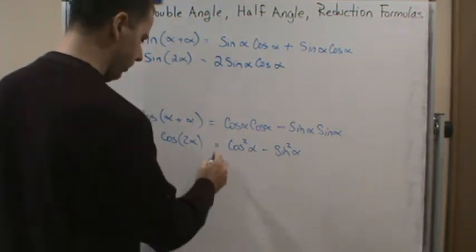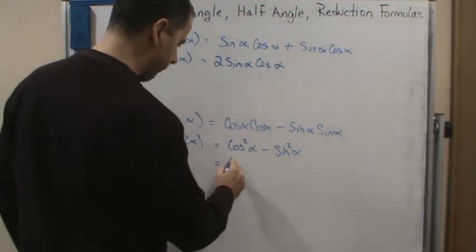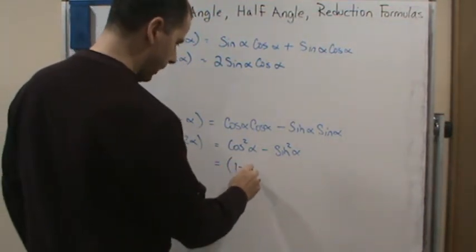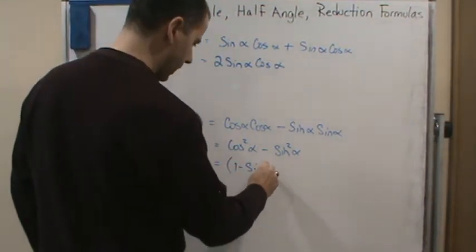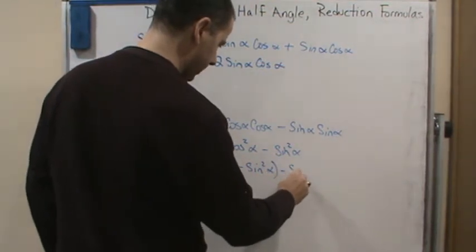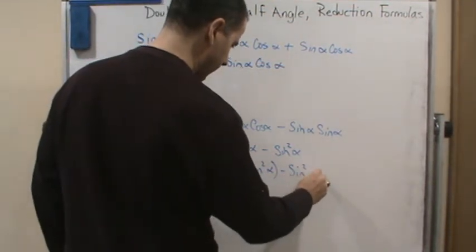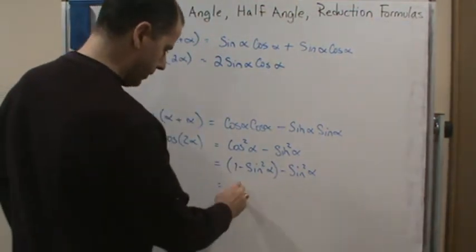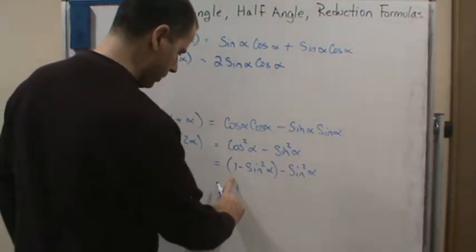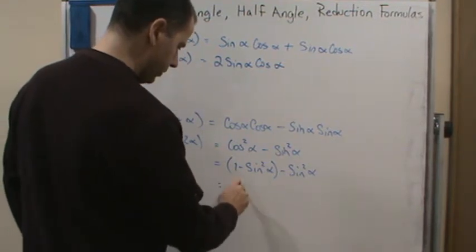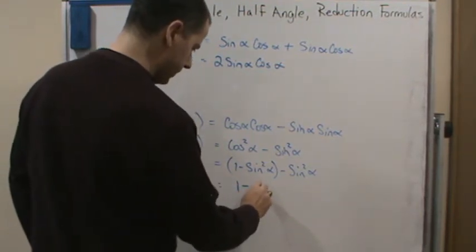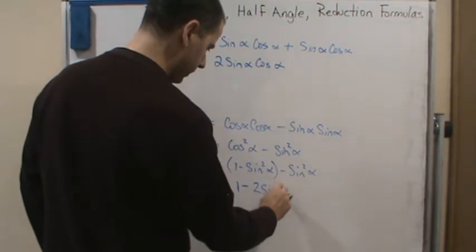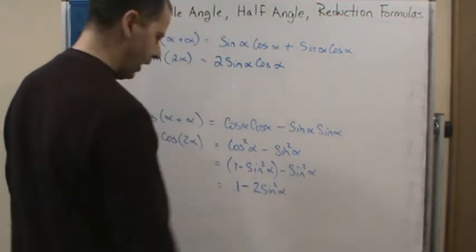And so there's two variations depending on which do we want to substitute in for the Pythagorean identity. So if we do this one, then we have what? 1 minus sine squared alpha minus sine squared alpha. And then this gives us what? It gives us 1, oops.